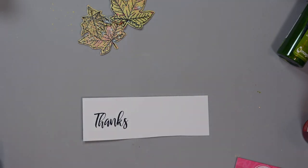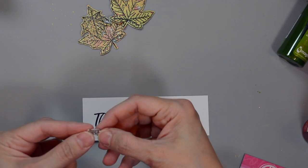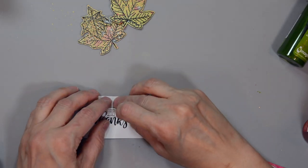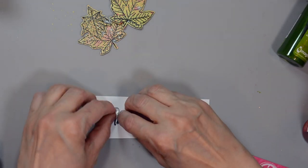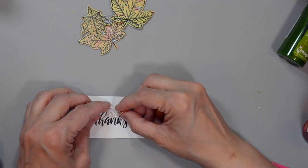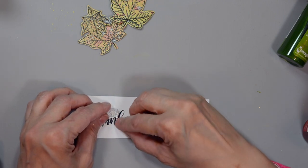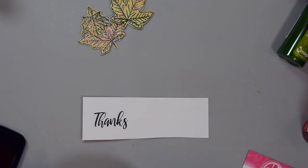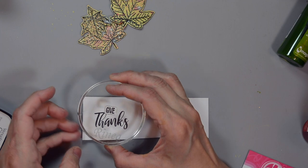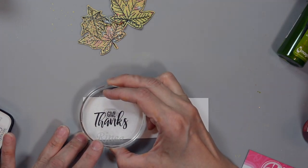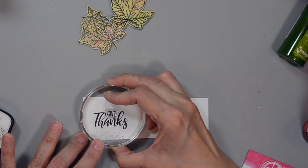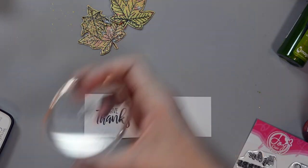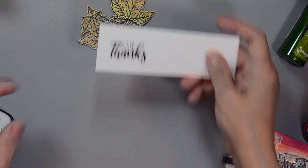And I'm using the VersaFine Clair Nocturne ink once again. And there's a tiny little give word in there. And I'm trying to nestle it between the top loop of the H and the top loop of the K. Once I have it there where I want it, I'm going to pick it up with my block, ink it up, and stamp it in there. And then I'll trim this sentiment panel down.